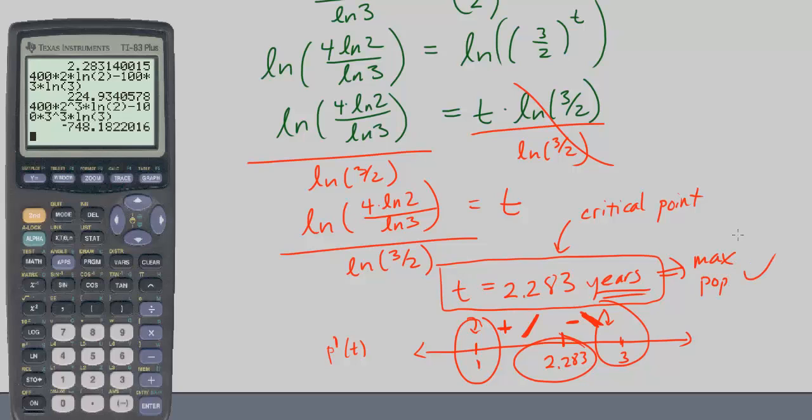So remember, we need to check our critical points. We can't assume they're a maximum or a minimum unless we see the graph or do the first derivative test. This is the first derivative test. Alright, so that ends for us CPM Calculus Chapter 6, Number 76.